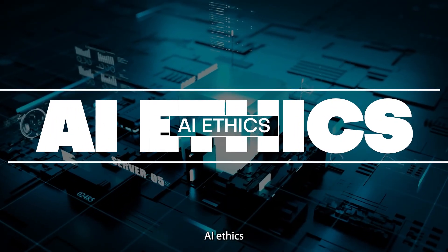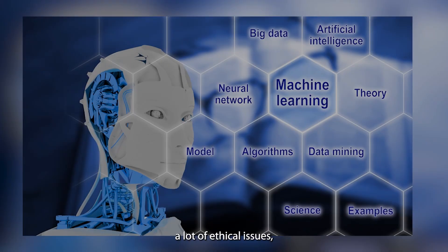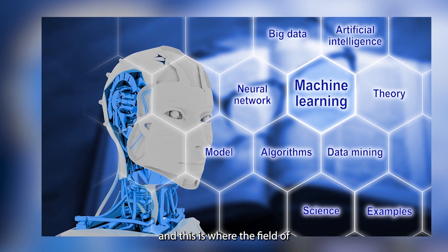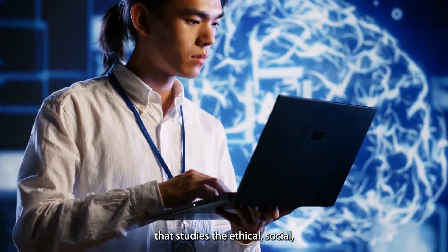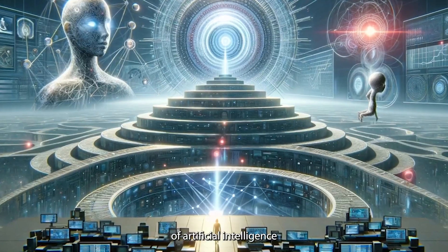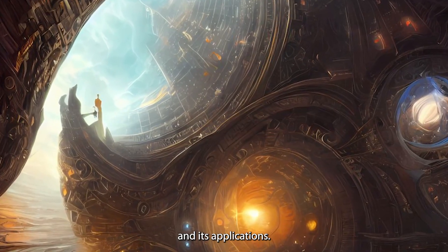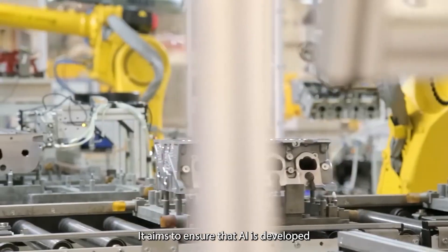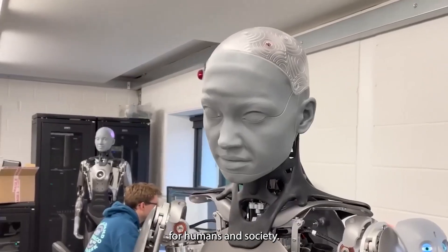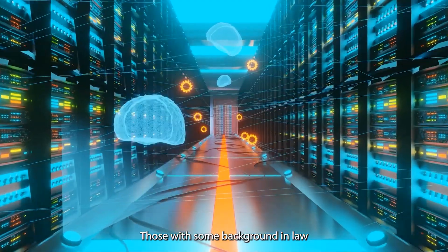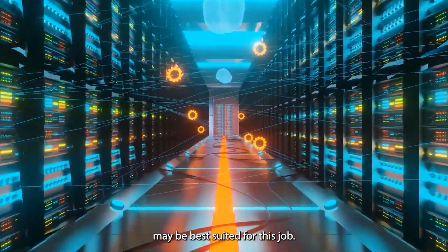Number six, AI ethics. With AI advancements will come a lot of ethical issues, and this is where the field of AI ethics comes in. This is a field that studies the ethical, social, and legal implications of artificial intelligence and its applications. It aims to ensure that AI is developed and used in a responsible, fair, and beneficial way for humans and society. Those with some background in law may be best suited for this job.